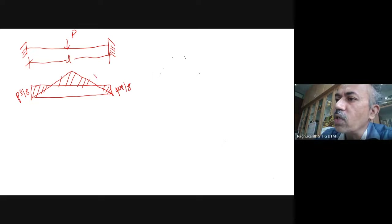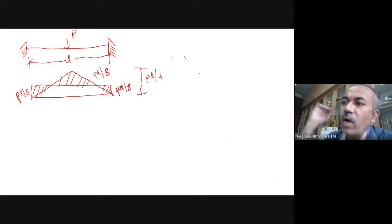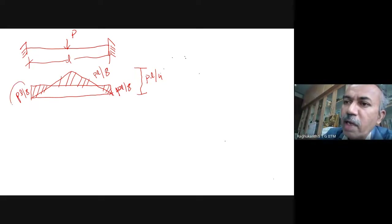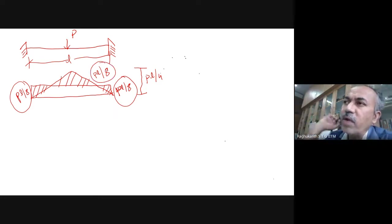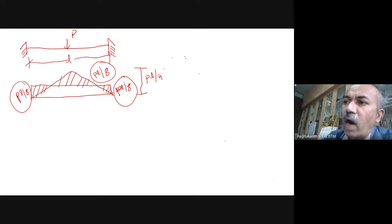For a simply supported beam subjected to UDL, draw the bending moment diagram. The bending moment at the support of a fixed-fixed beam under UDL is WL² by 12, and at the center it is WL² by 24. So where does the hinge form first? At the supports, because bending moment is higher there.